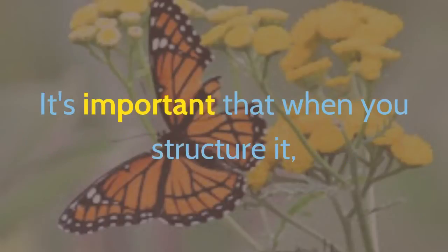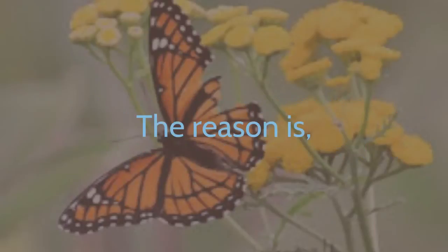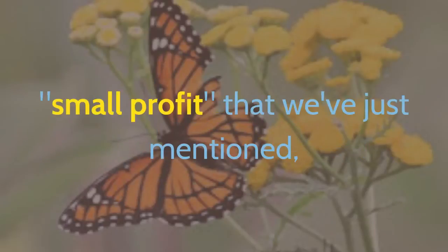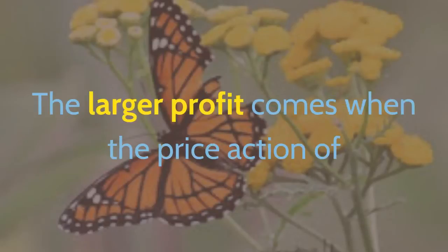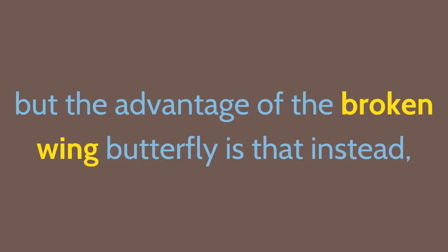It's important that when you structure it, you do it so that you receive an initial credit to your account. The reason is because this credit will become the small profit that we've just mentioned should the price action go against you. The larger profit comes when the price action of the underlying moves in the direction you anticipate. The traditional long butterfly spread is usually created with a net debit to your account, but the advantage of the broken wing butterfly is that instead you start out with a credit.